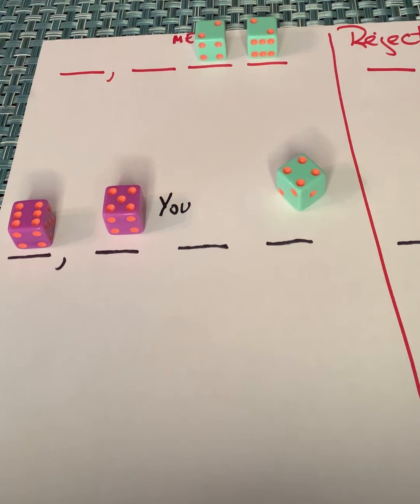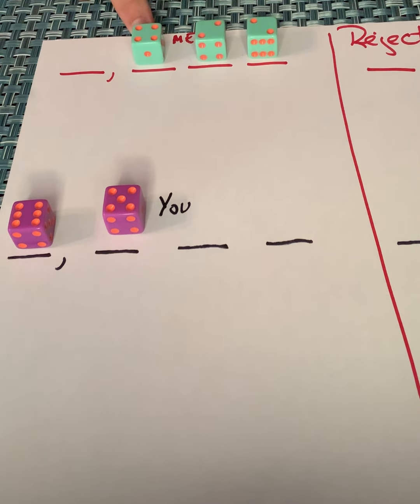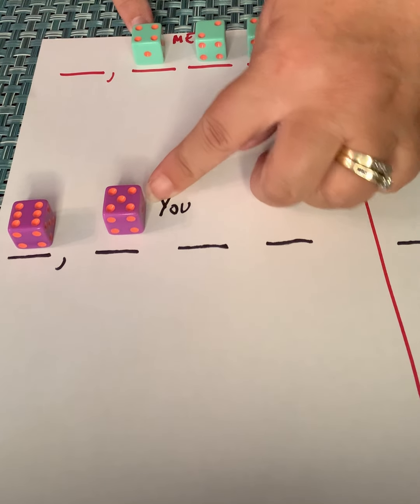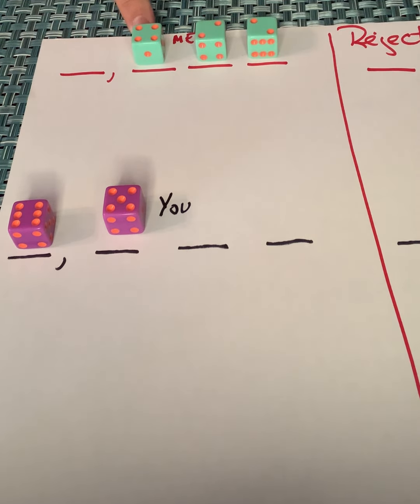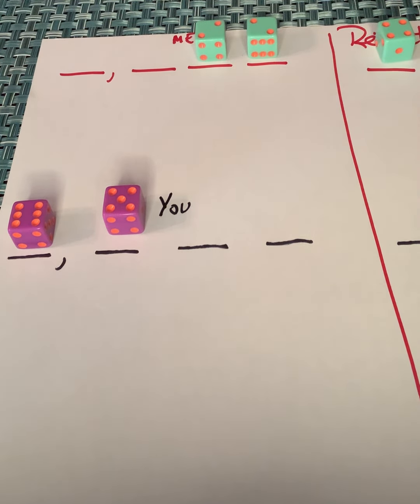Okay. My turn to roll. I roll a four. That is pretty good. But if I put it in the hundreds and then I roll a six, my son is still going to beat me because he's got five hundreds. I only have four hundreds and I can't put it here because I'm definitely going to lose. So it looks like I'm going to have to reject my four.